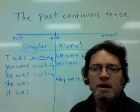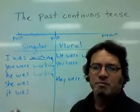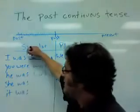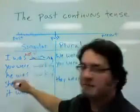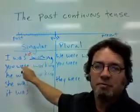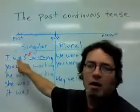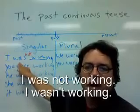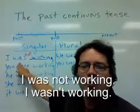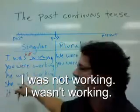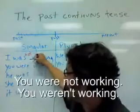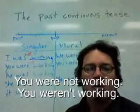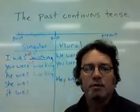To make the negative for the past continuous tense, add 'not' after the verb be. You can say, for example, 'I was not working' or 'I wasn't working.' 'You were not working' or 'you weren't working.'